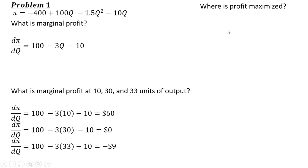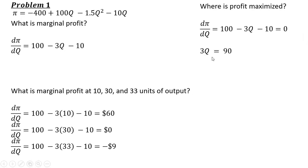Profit is maximized where marginal profit is zero, so we set our marginal profit equation equal to zero and solve for q. Since 100 minus 10 is 90, rearranging and dividing through by three gives us that maximum profit occurs at 30 units of output.